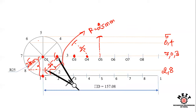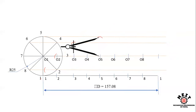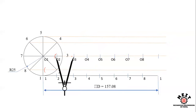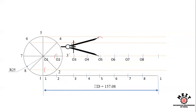Continue placing the compass needle at each successive center — center 3, 4, 5, 6, 7 — and draw arcs of radius 25mm. Each arc intersects the corresponding horizontal line from the matching circle point, giving you all the curve points. Collect all these arc intersection points.